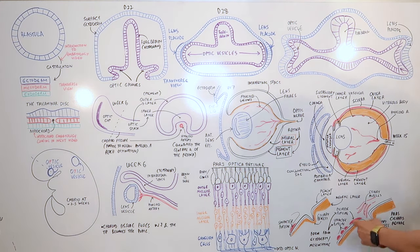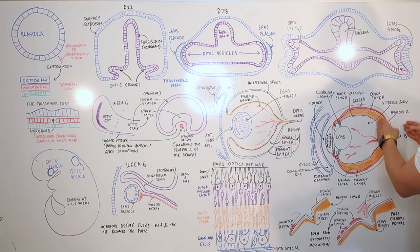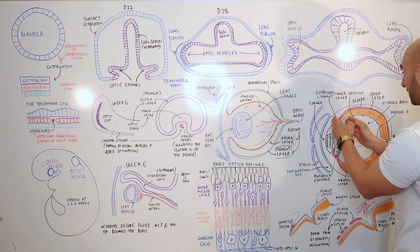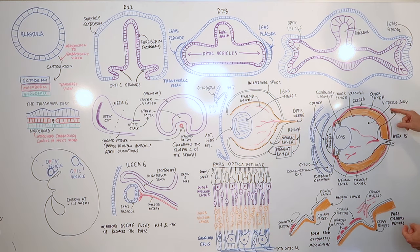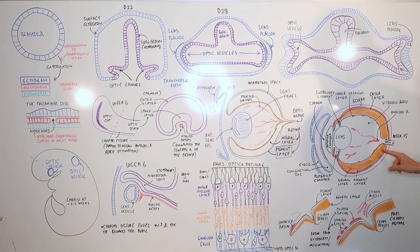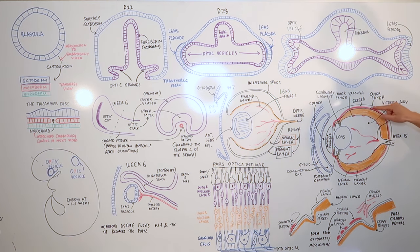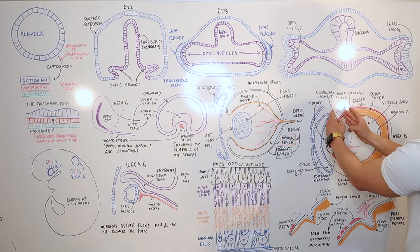Let's talk about the mesenchyme. There is both posterior and anterior mesenchyme. The posterior mesenchyme has an inner layer continuous with the pia mater — that is the choroid vessels — and an outer layer continuous with the dura mater — that will be the sclera. So the inner vascular layer is the choroid, and the outer layer is the sclera.